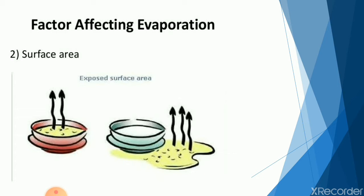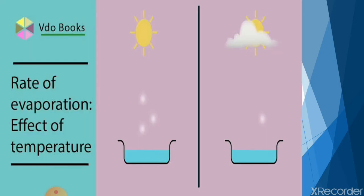If we increase the surface area, we increase evaporation. If we decrease the surface area, we decrease evaporation. By increasing temperature, we can also increase evaporation. At high temperature, molecules having greater energy increase, and so the rate of evaporation increases.